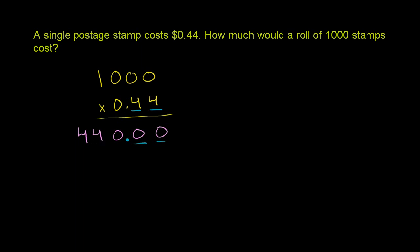So our answer is 440. And these trailing zeros really add nothing there. So 1,000 times 0.44, or 44 cents, is 440. It's going to cost us $440 to buy 1,000 stamps.